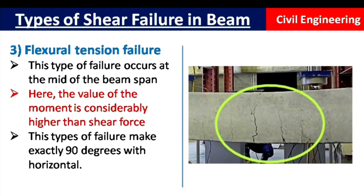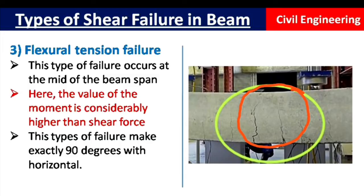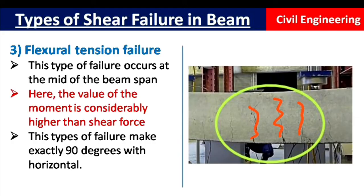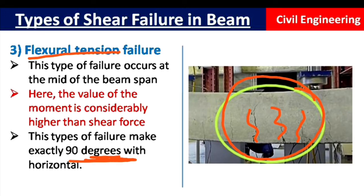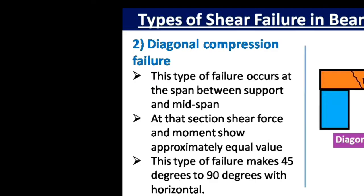The third failure is flexural tension failure. This type of failure occurs exactly at the mid-span of the beam, where the cracks form at exactly 90 degrees with the horizontal. At this point, the bending moment is maximum and the shear force is almost zero — the moment is considerably higher than the shear force. So, cracks occur exactly at mid-span and make a 90-degree angle with the horizontal.